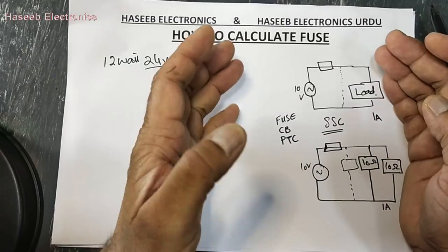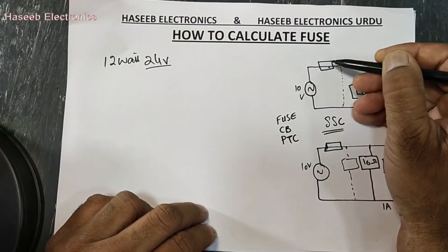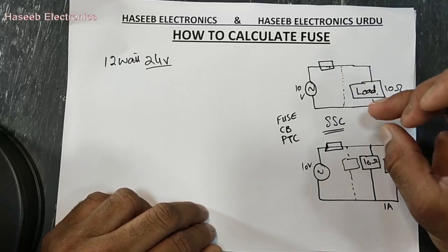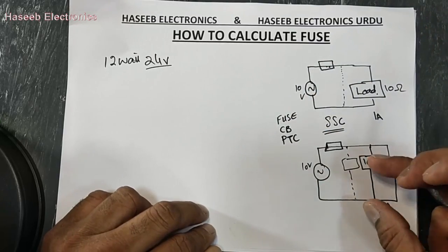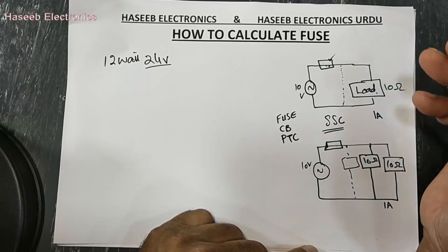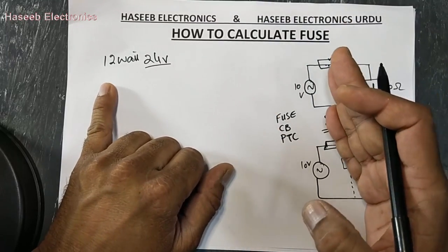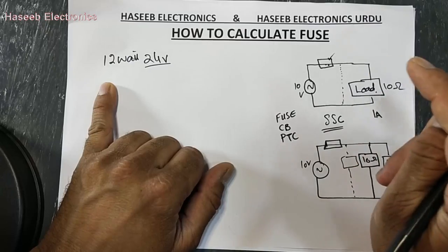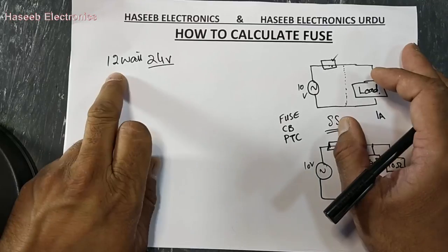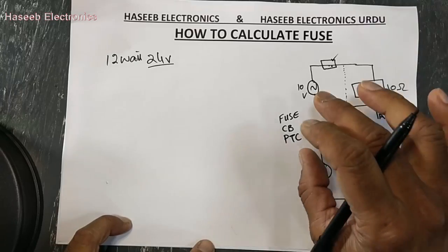A fuse is a device which will protect the system from short circuit or overload. How can we determine the value of a fuse and what is the level of protection? If you have not subscribed to my channel, I request you to kindly subscribe and press the bell icon for all notifications. To calculate a fuse, first of all calculate what is the operating current.